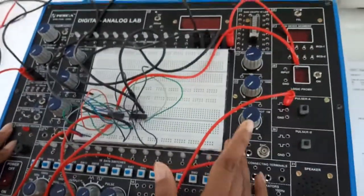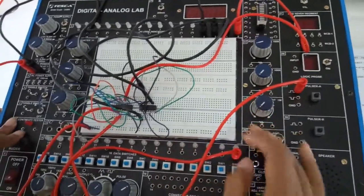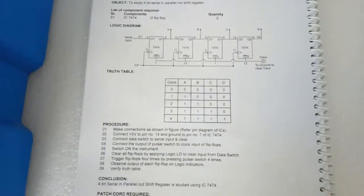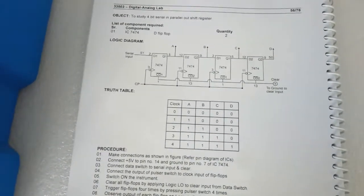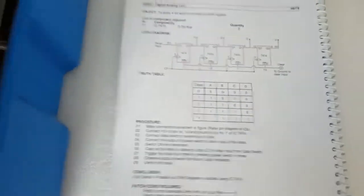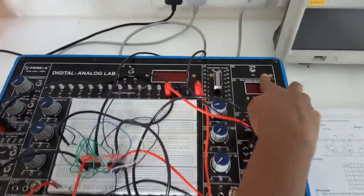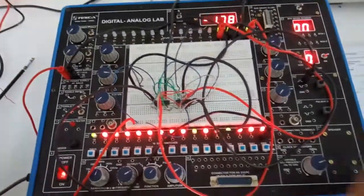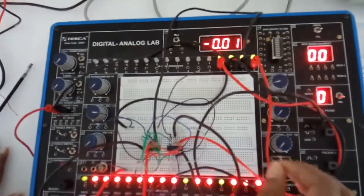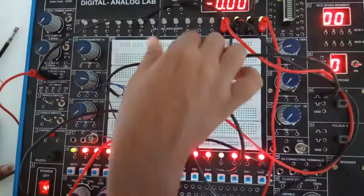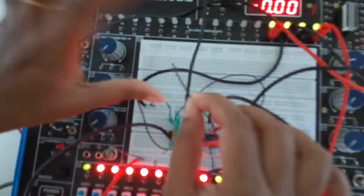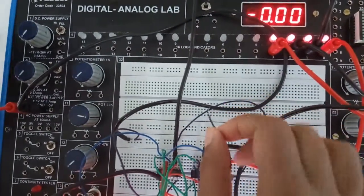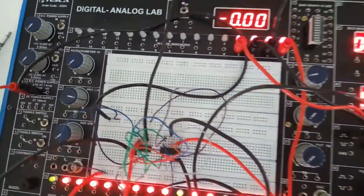The circuit diagram is complete. Now we will verify the truth table of the 4-bit serial in parallel out shift register. Select TTL mode and turn on the kit. Touch the clear wire momentarily to ground and the register resets to 0. Give the manual pulsar.